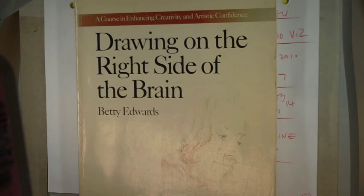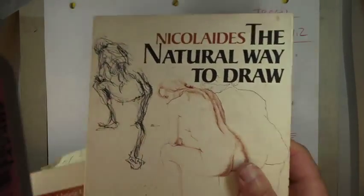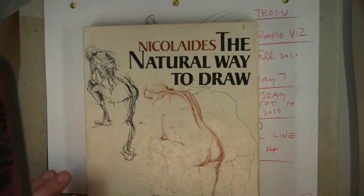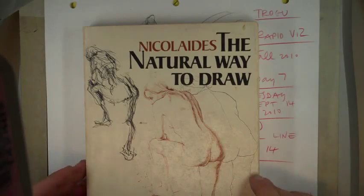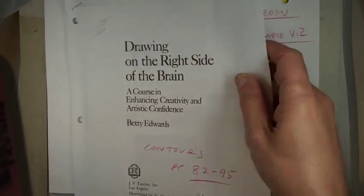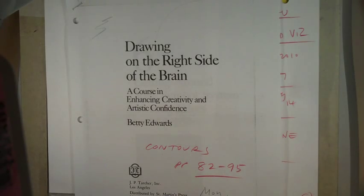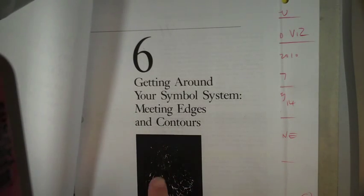She picked up the exercise from a previous book by a guy named Nicolaides, and that's called The Natural Way to Draw. I have in iLearn the PDF of the chapter from Drawing on the Right Side of the Brain, and the chapter itself is called Getting Around Your Symbol System, Meeting Edges and Contours.